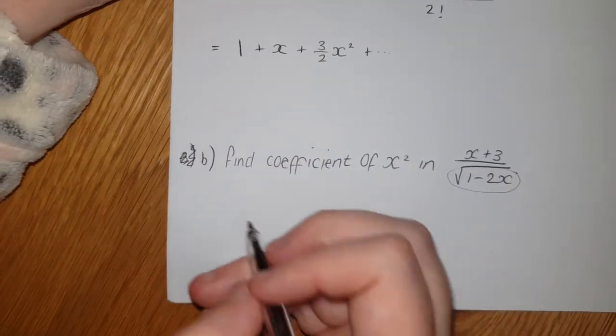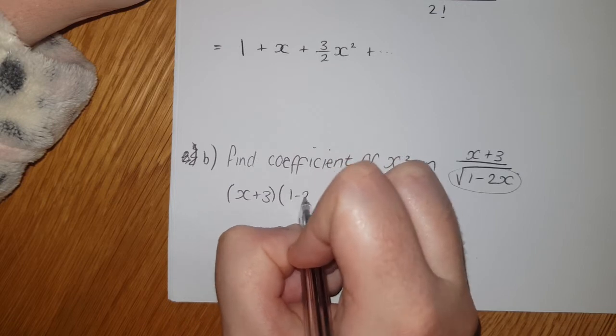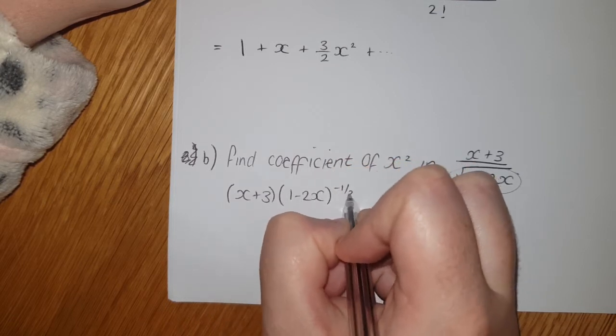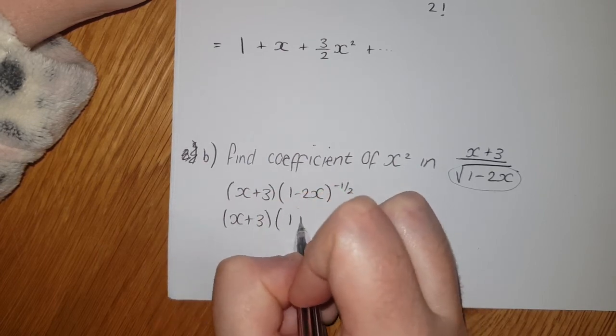So this is basically the same as me saying (x+3) multiplied by (1-2x)^(-1/2). This we've already expanded, so I'm actually doing (x+3) multiplied by the answer we just had there.